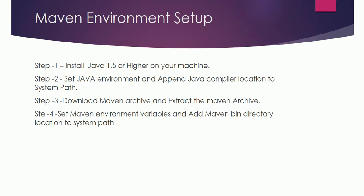For Maven environment setup, first we need to install Java 1.5 or higher, then set the environment variable for Java and set the system path. Next, download the Maven archive file and extract it. Finally, set the environment variable and add the Maven bin directory location to the system path. Java is a must — two packages are needed: Java and Maven. I will show the full Maven environment setup during the lab session.